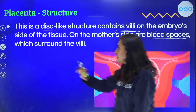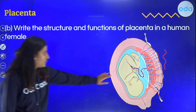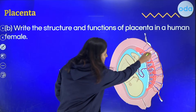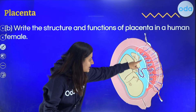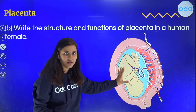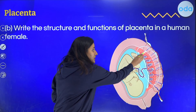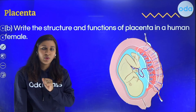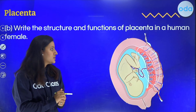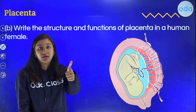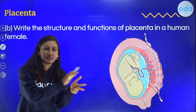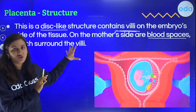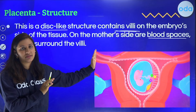Looking at the image of the placenta — this disc-shaped structure is the placenta. There are finger-like extensions coming from the fetus side, embedded within the mother's uterus in the blood spaces. Blood is present there to help in the exchange of substances. So: placenta is a disc-like structure with villi from the fetus side, embedded in and surrounded by the mother's blood.